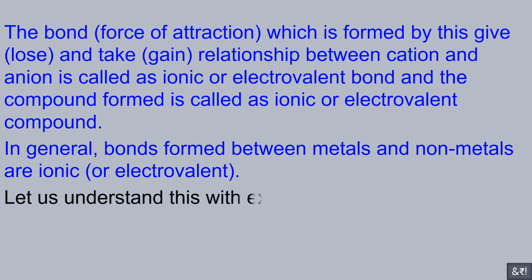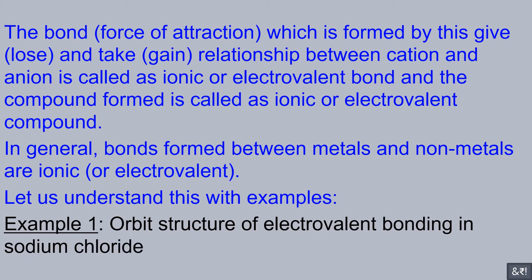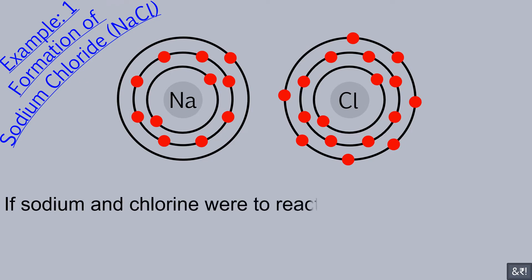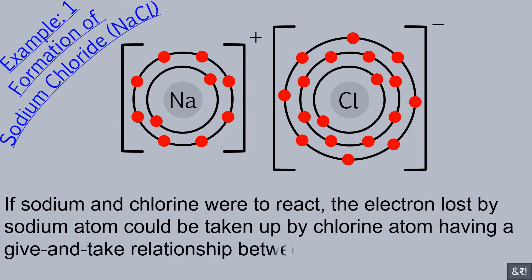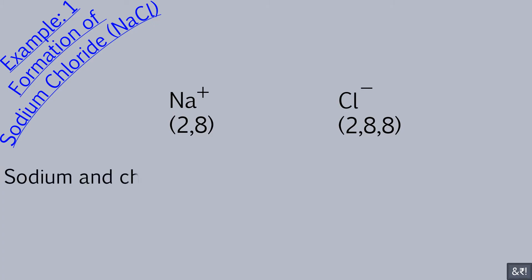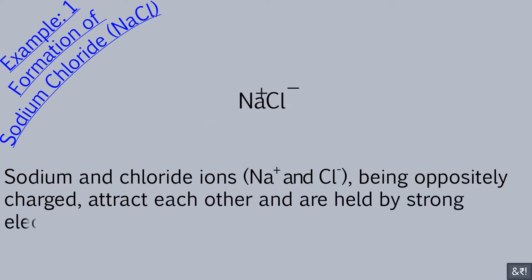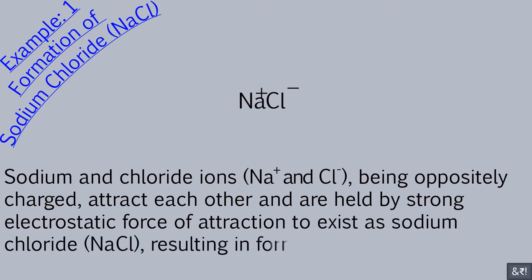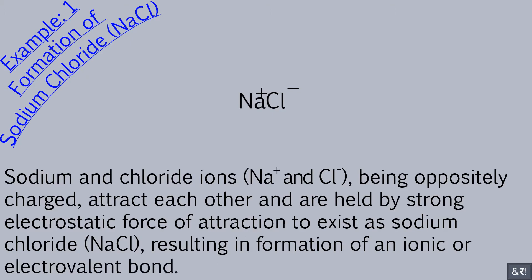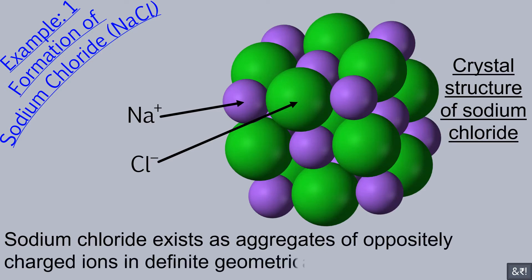Let us understand this with examples. Example 1: orbit structure of electrovalent bonding in sodium chloride. If sodium and chlorine were to react, the electron lost by the sodium atom could be taken up by the chlorine atom, having a give-and-take relationship between them. Sodium and chloride ions, being oppositely charged, attract each other and are held by strong electrostatic force of attraction to exist as sodium chloride, resulting in formation of an ionic or electrovalent bond.